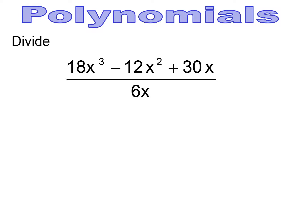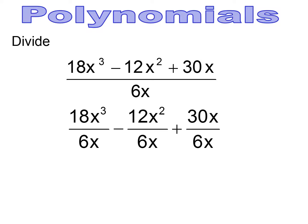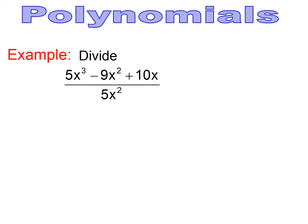Pause and try. It's easier if you separate into three separate problems and simplify piece by piece. 18 divided by 6 is 3, x³ divided by x is x squared. Then 12 divided by 6 is 2, and x squared divided by x is minus 2x. And lastly, 30 divided by 6 is 5 and the x's cancel out. Be careful — division of polynomials doesn't always simplify cleanly.